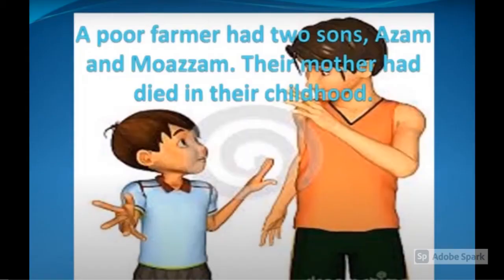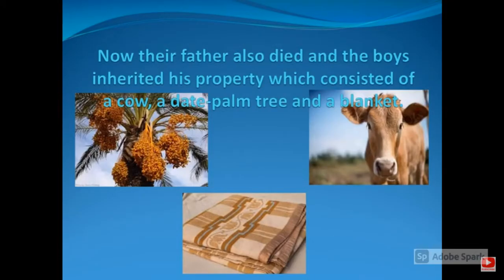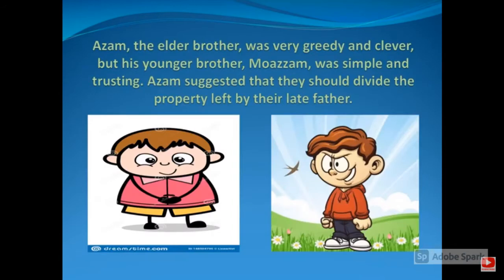A poor farmer had two sons, Assam and Moazam. Their mother had died in their childhood. Their father also died, and the boys inherited his property, which consisted of a cow, a dead palm tree, and a blanket.